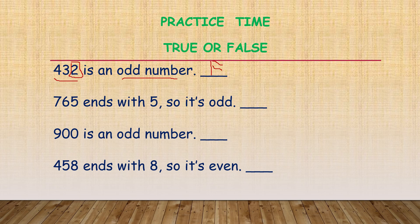Now, 765 ends with 5, so it's odd. Yes, of course. 5 is an odd number. That's why this blank is true.